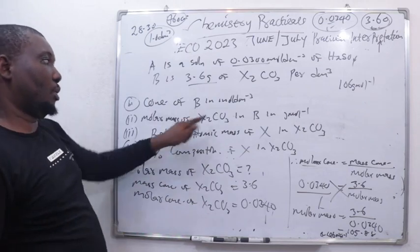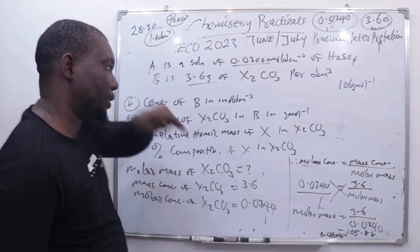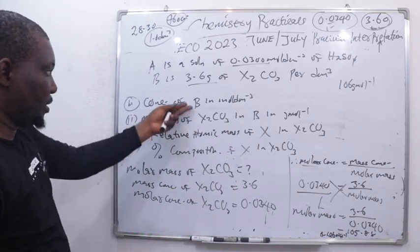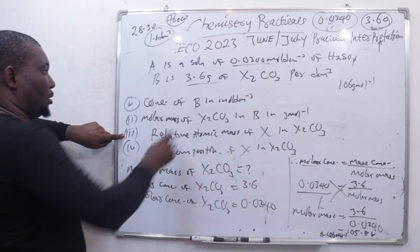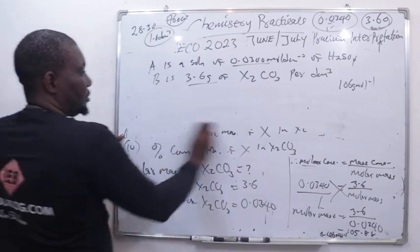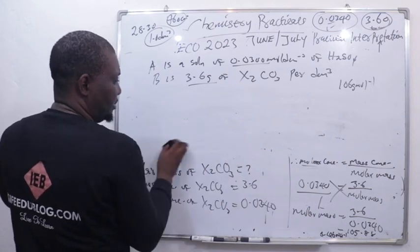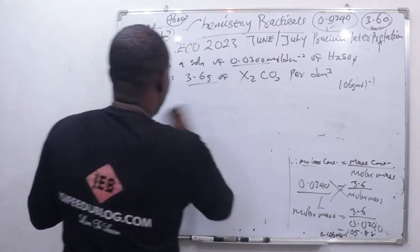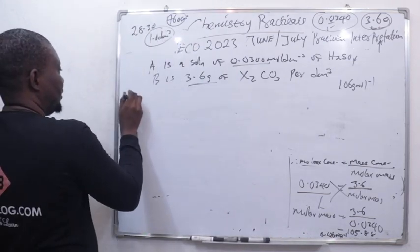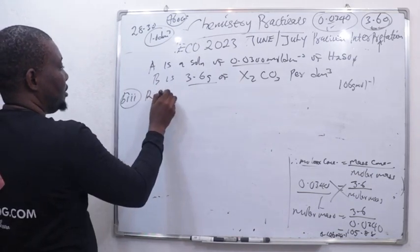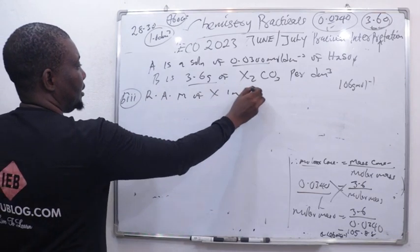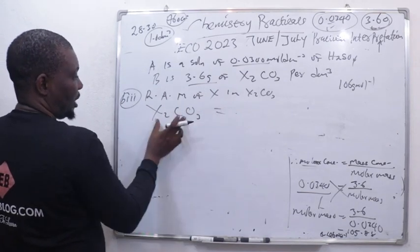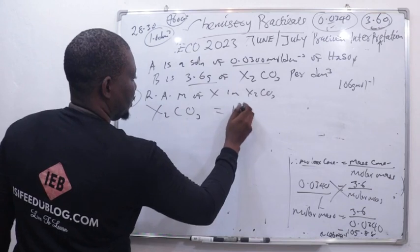Pause the video and check what we did, because from what we obtained here, we now have to find the relative atomic mass of X. X in this question is unknown. Let's quickly go to part B(iii): finding the relative atomic mass - RAM - of X in X₂CO₃.